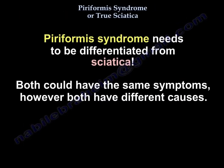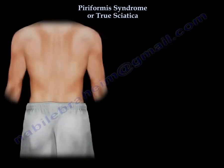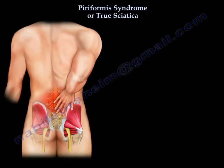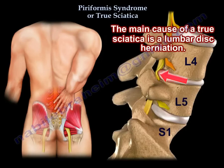Piriformis syndrome needs to be differentiated from sciatica. Both can have the same symptoms, but they have different causes. The diagnosis should be made by exclusion of a spine problem that compresses on the spinal nerve root and causes sciatica. The main cause of true sciatica is disc herniation.